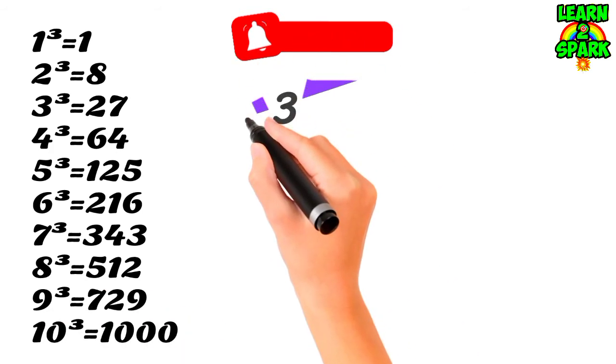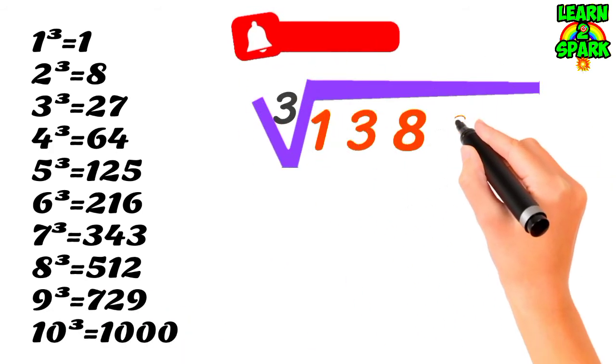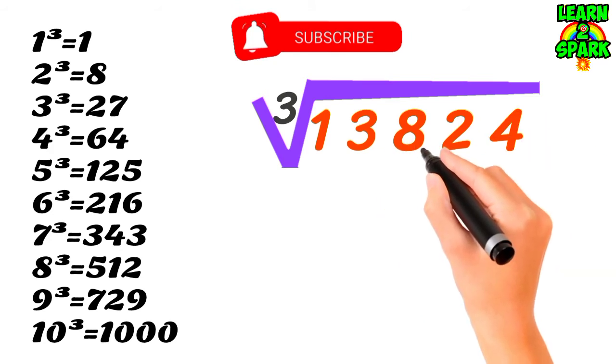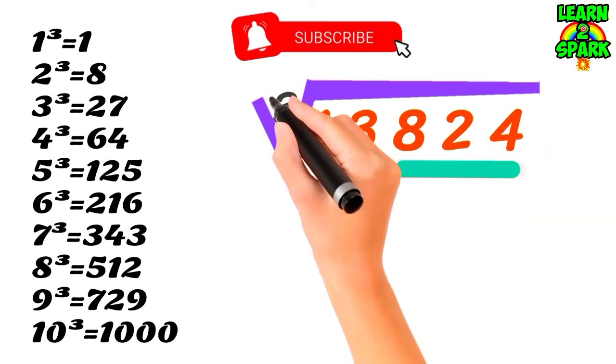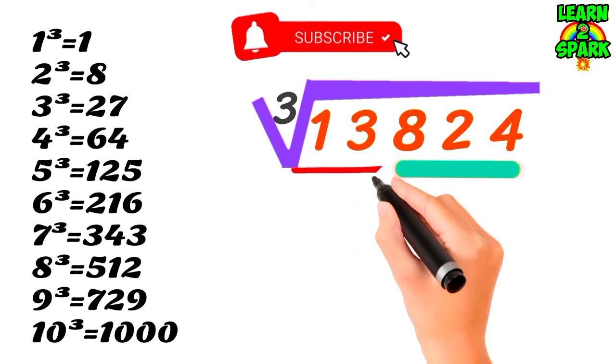Let's do it with a 5-digit number, that is 13824. Split it up into 2 groups, last 3 in one group and remaining in another.